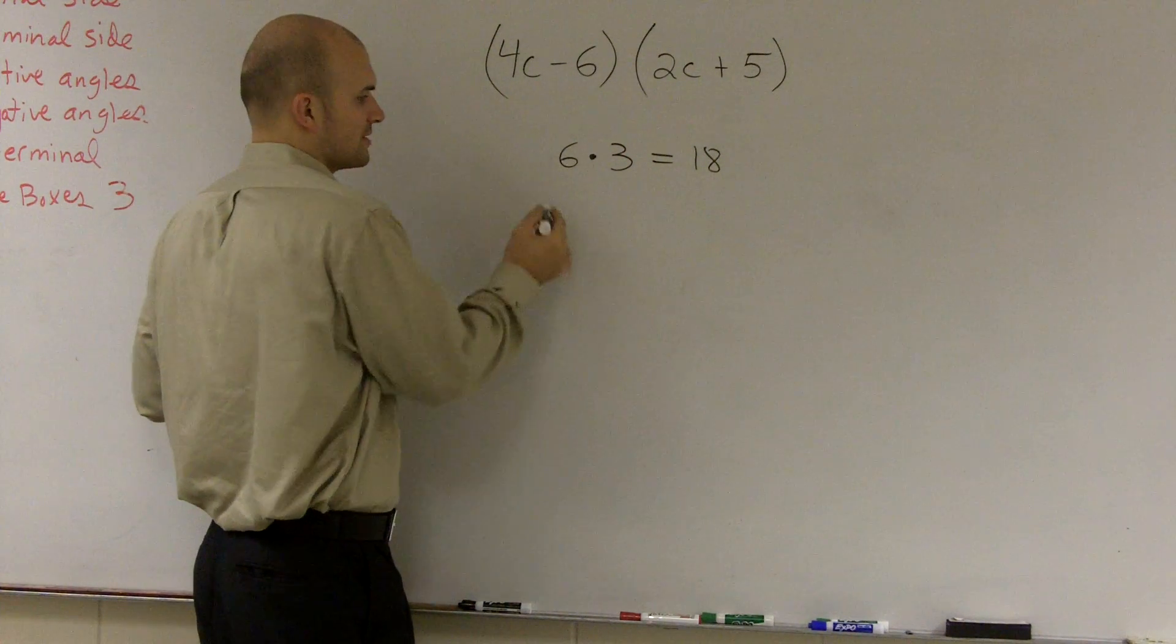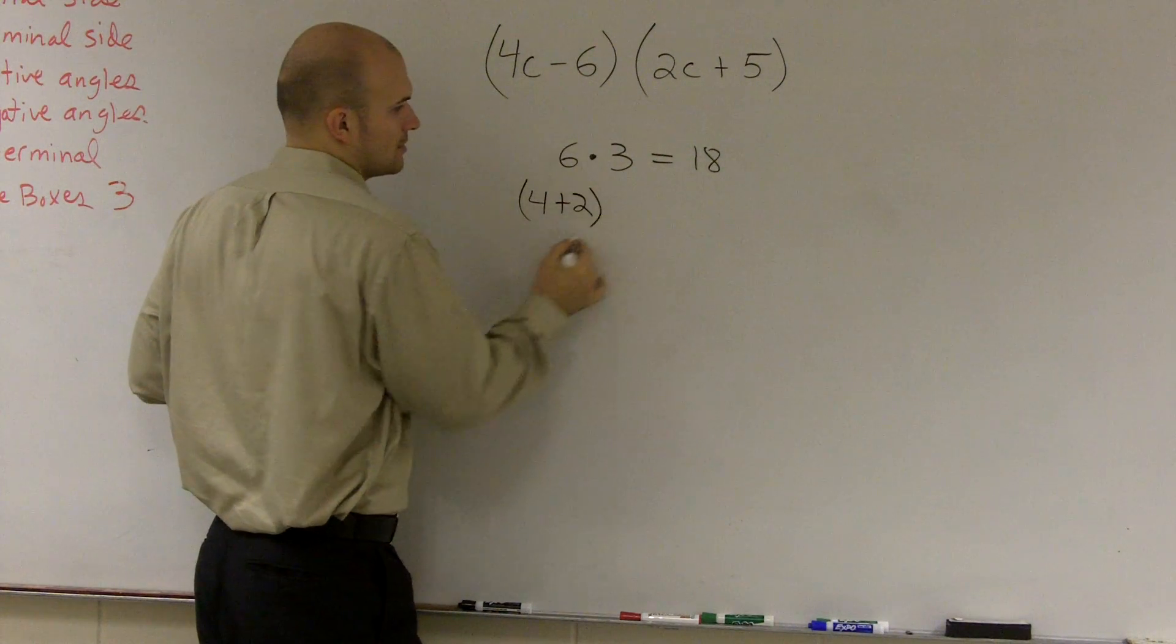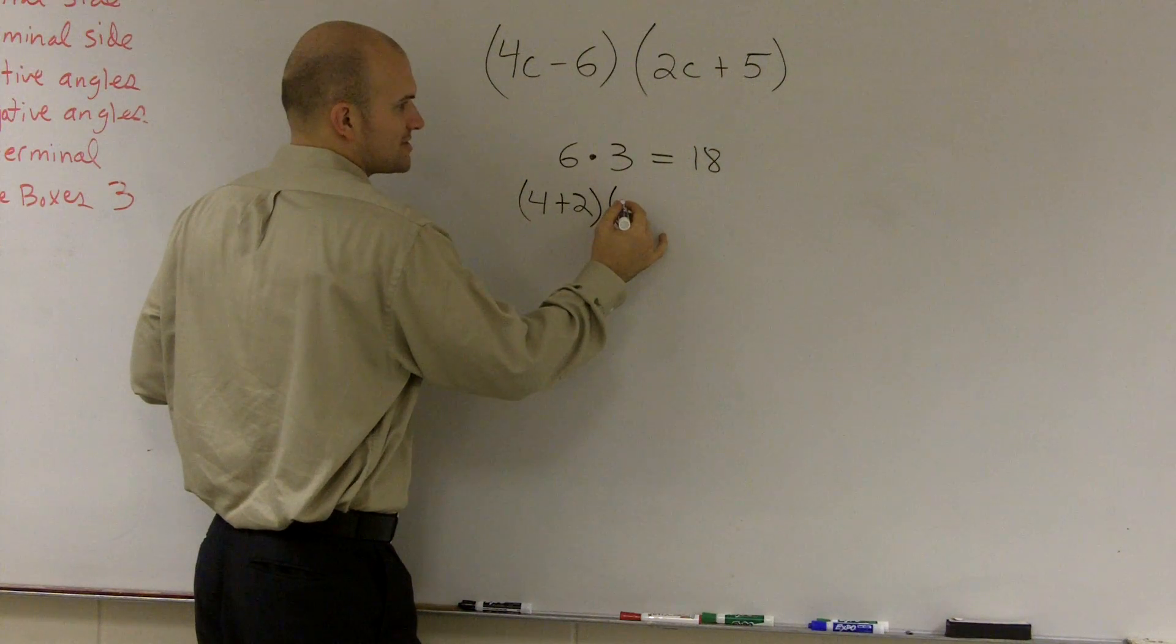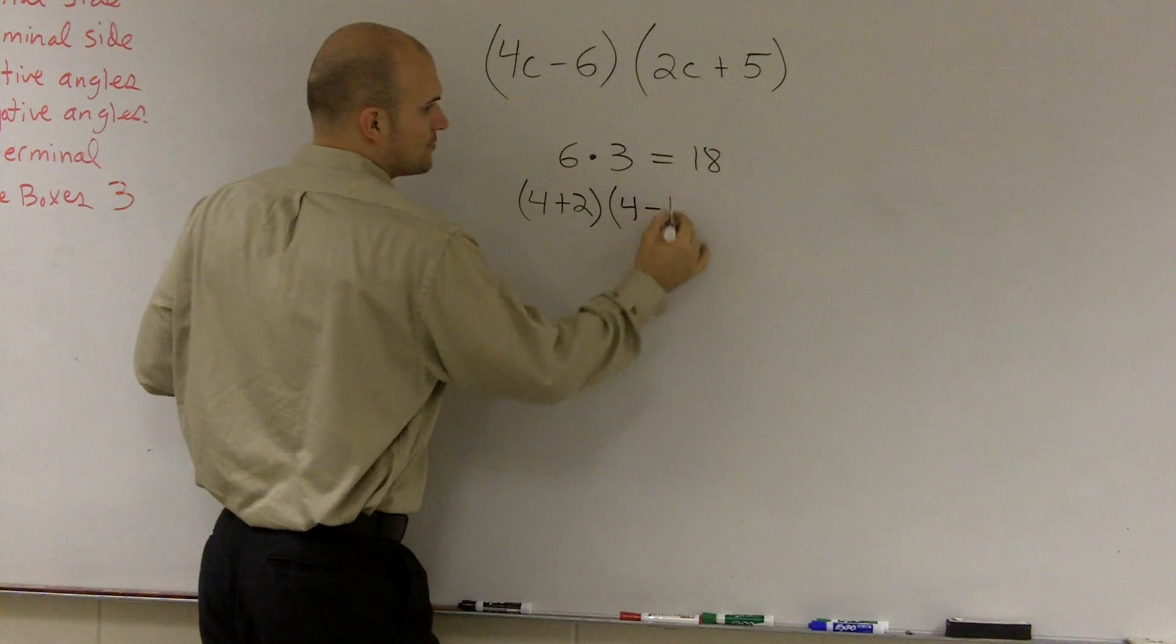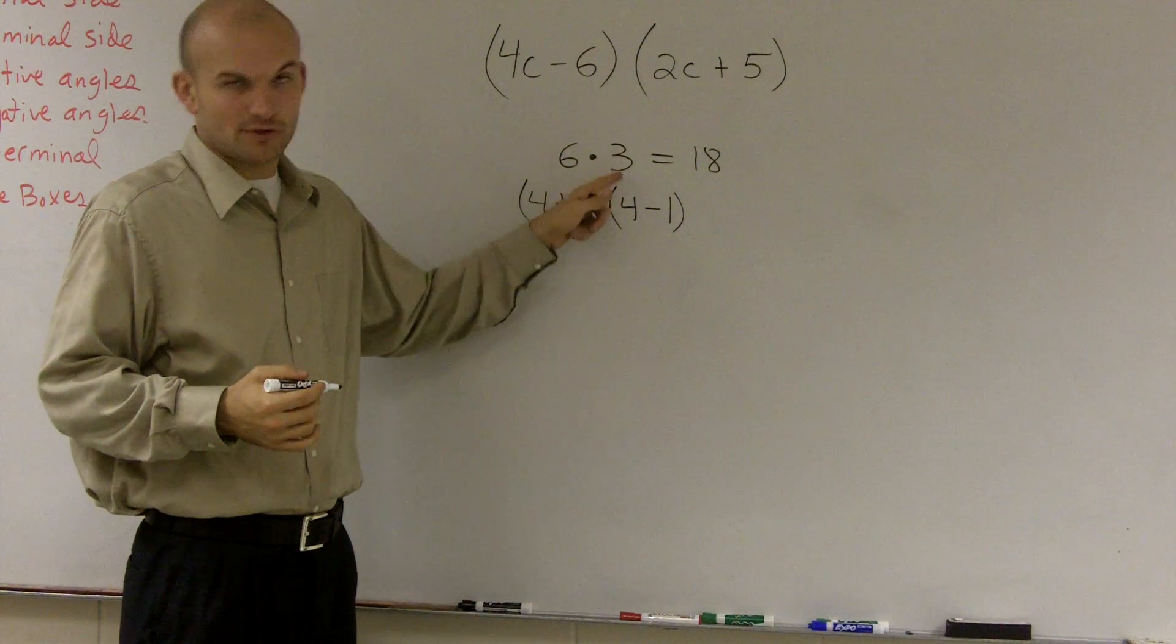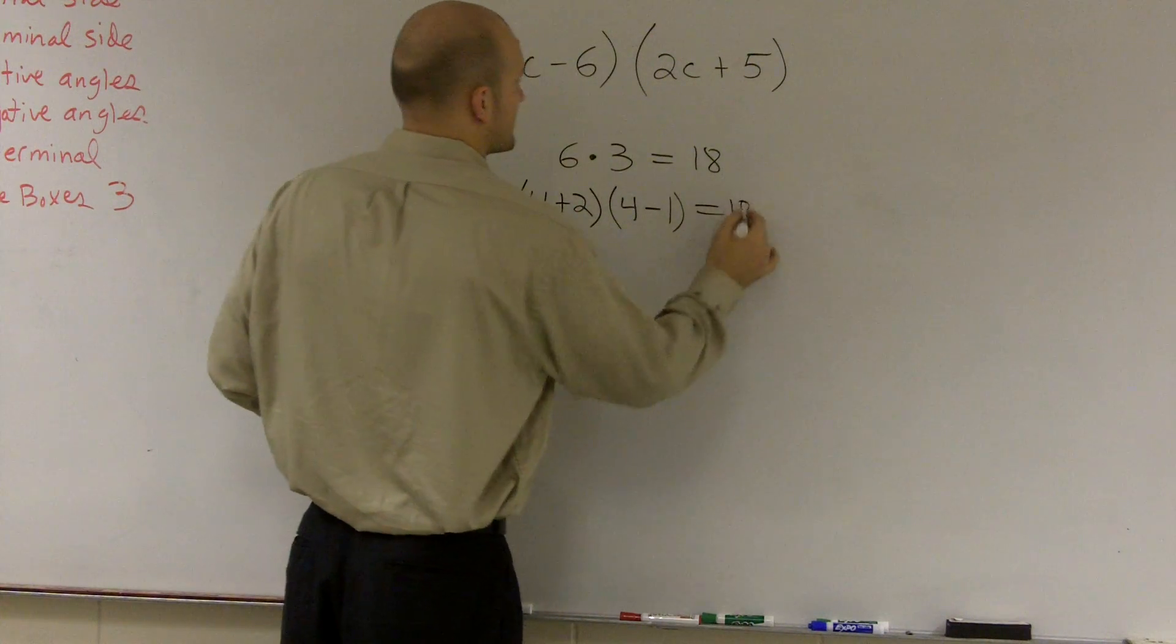So I'm going to rewrite 6 as 4 plus 2, all right? And I'm going to rewrite 3 as, let's do 4 minus 1. So does 6 times 2 still equal 6? Yes. Does 4 minus 1 still equal 3? Yes. And I'm going to show you that they equal 18.